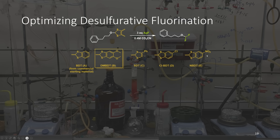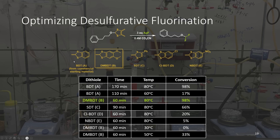After this worked, we prepared a suite of reagents and examined their relative reactivity compared to BDT. When we had electron-withdrawing groups, as in the case of D and E, we saw reduced conversion to the desired difluoroether at 80°C in acetonitrile. However, when we explored electron-rich cases such as C or B, we observed greater conversion. The high yield and low reaction time of DMBDT, the dimethoxybenzene dithiol, led us to use this in our subsequent chemistry.